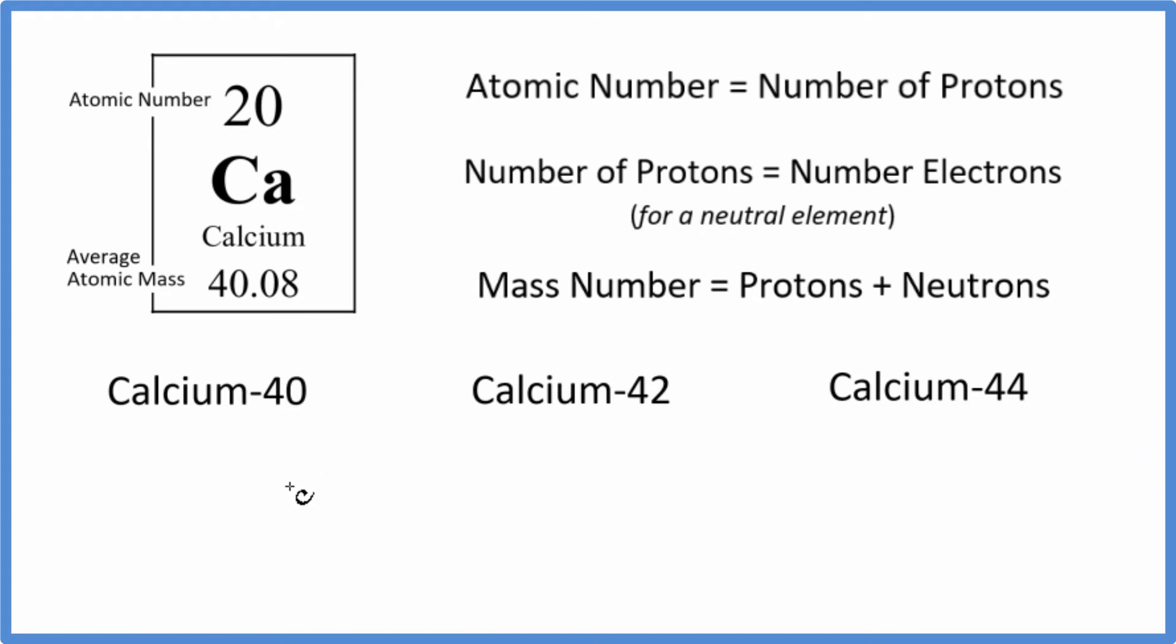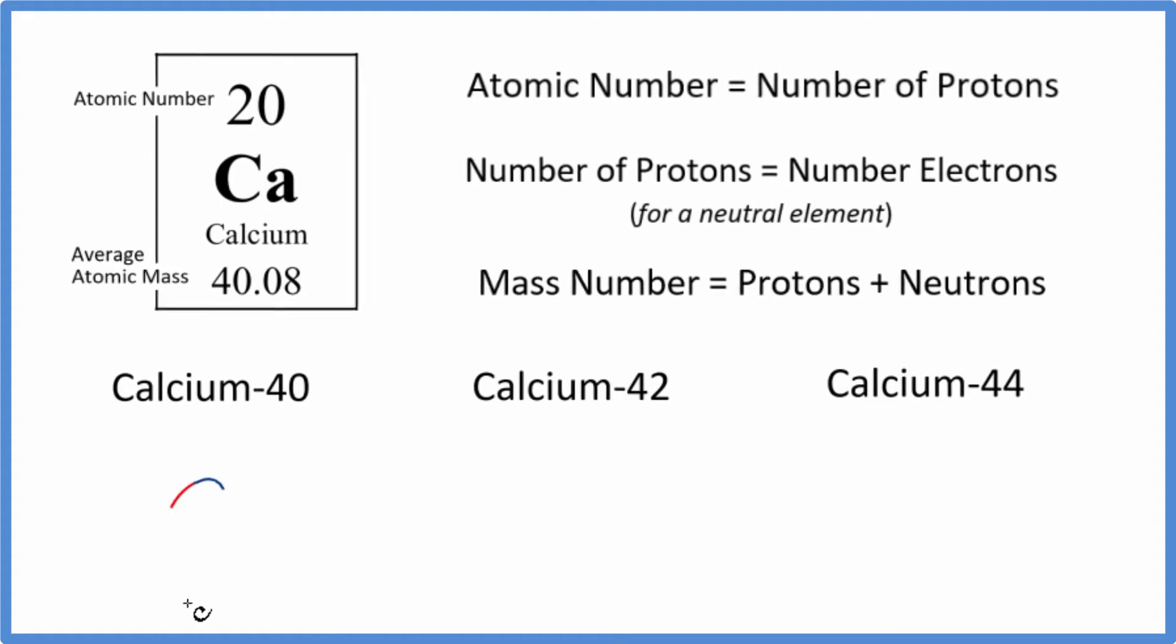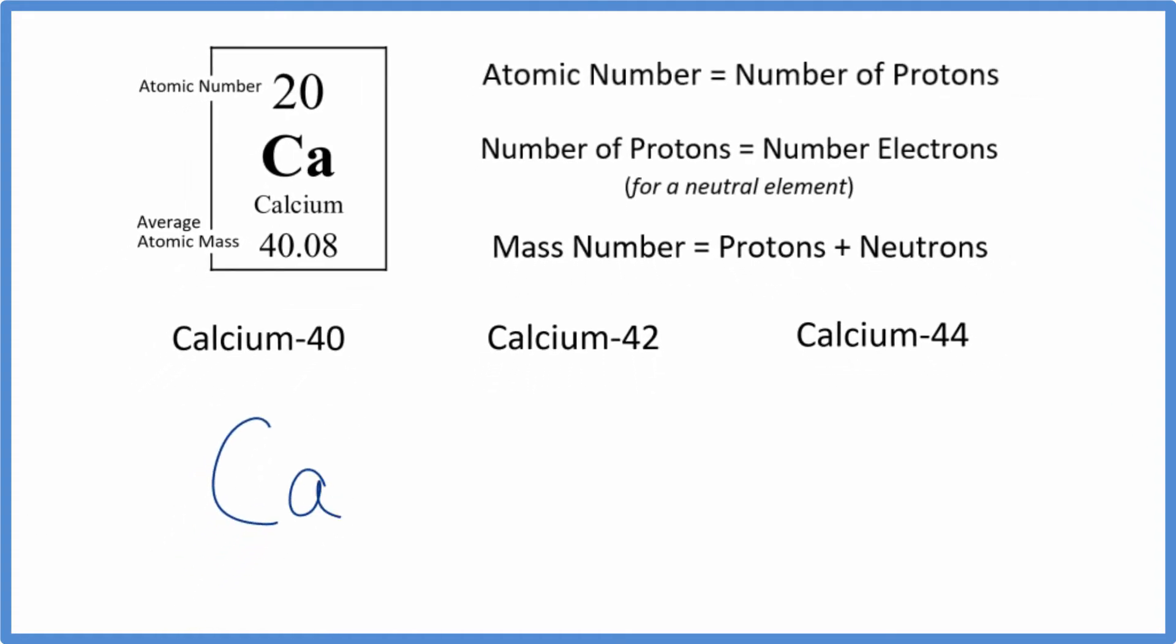Let's write the isotope notation or nuclear notation for calcium. So for this first isotope here, calcium-40, we'd write Ca, and then the mass number, that would go up here, the atomic number we'd put down here, and then the ionic charge, if it has one, that would go over here.